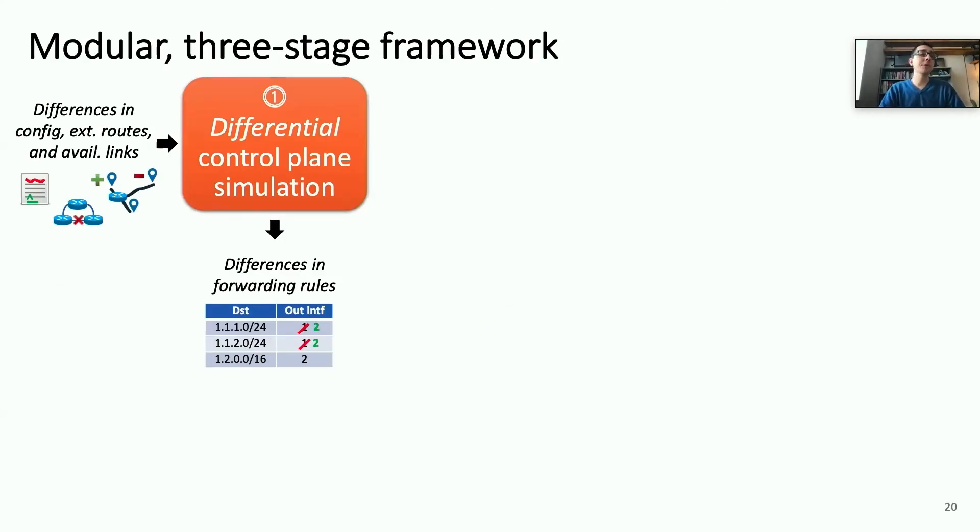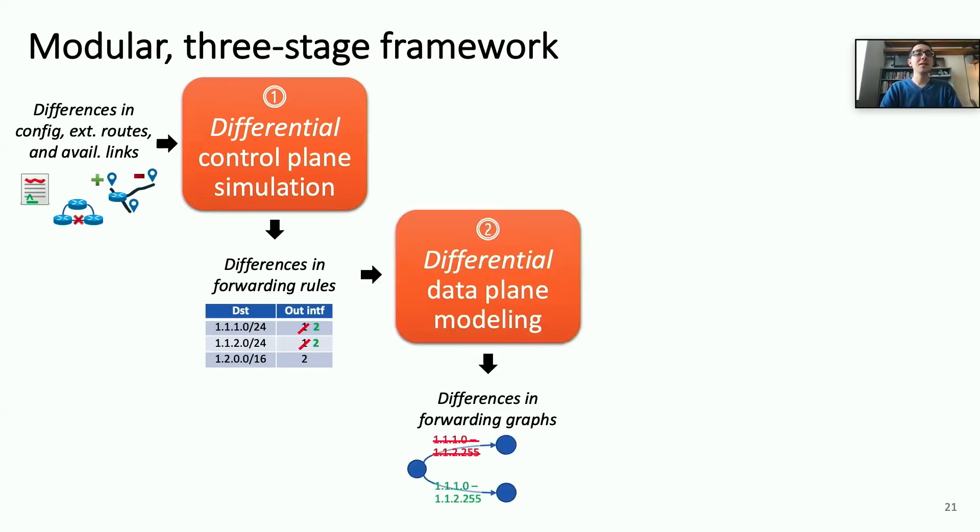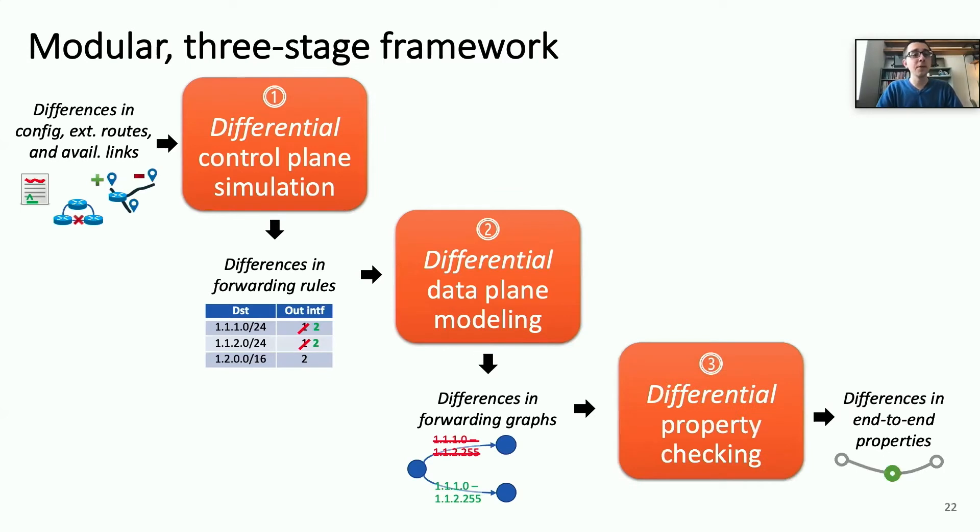We address these challenges using a modular three-stage framework. Each stage takes differences as input and produces differences as output. The first stage takes differences in configurations, external routes, and available links, and it simulates the control plane in order to produce differences in the actual forwarding rules. The second stage takes these differences in forwarding rules and conducts differential data plane modeling in which these forwarding rules are integrated into forwarding graphs, and the differences in the forwarding graphs resulting from the forwarding rule changes are output by this stage. The final stage takes these differences in forwarding graphs and conducts differential property checking. In other words, it traverses the forwarding graphs for the equivalence classes whose forwarding graph has changed, as well as from the points in the forwarding graph where those changes originate, and this gives us the final output of DNA, which is differences in end-to-end properties like reachability.